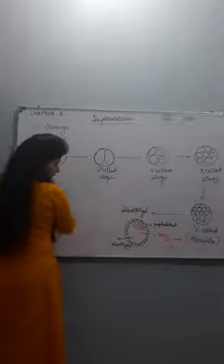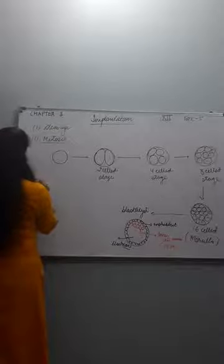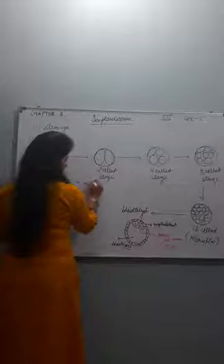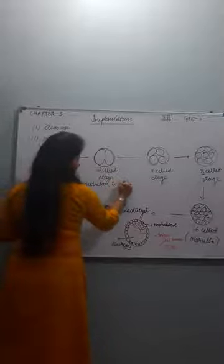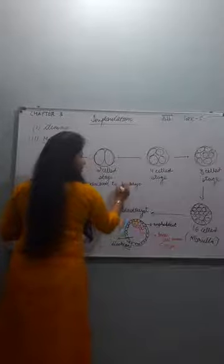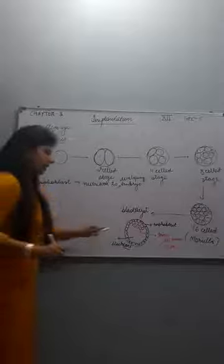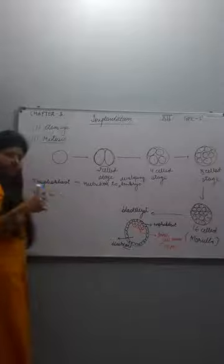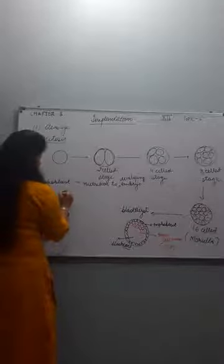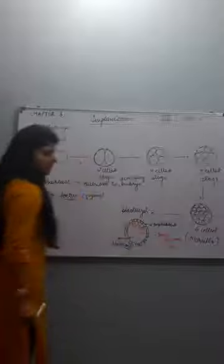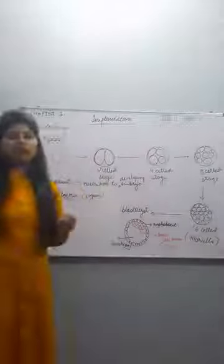The trophoblast leads to the formation of the placenta. Placenta is a tissue that provides nutrition to the developing embryo. The ICM will develop into the organs and fetus. So organs are formed from the ICM, whereas the trophoblast leads to the formation of the placenta.